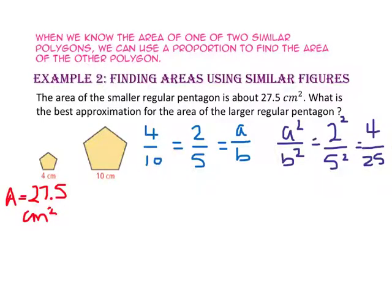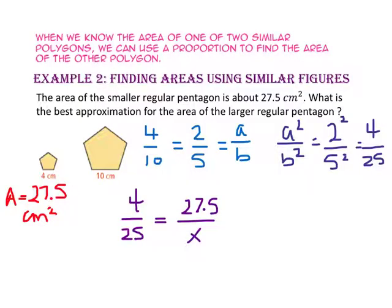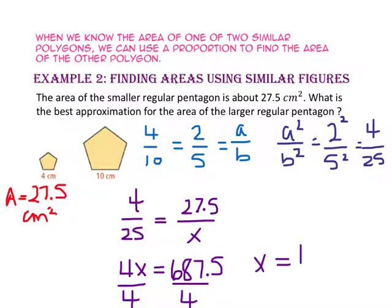Let's use the ratio of our areas to write a proportion to find the area of the larger pentagon. The area of the larger pentagon corresponds with 25, and 27.5 — the area of the smaller pentagon — corresponds with 4. So we get the proportion 4 to 25 equals 27.5 to x. Using the cross product property: 4 times x equals 25 times 27.5, which is 687.5. Divide both sides by 4, and x is approximately 171.9 centimeters squared.